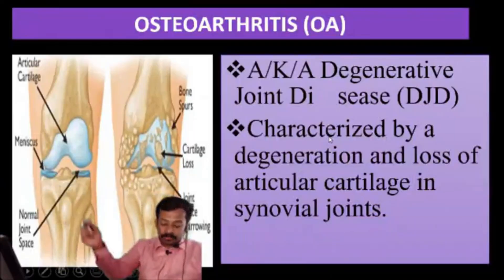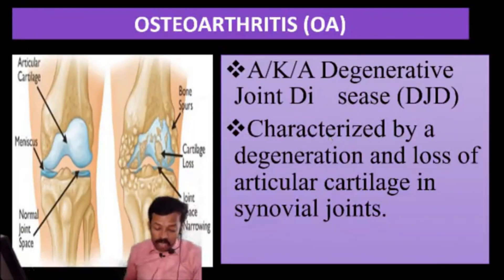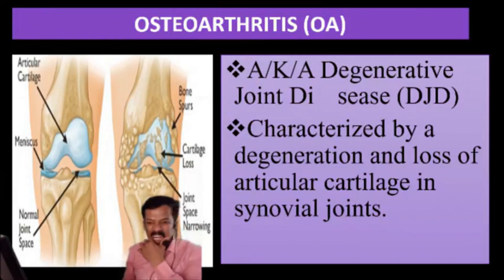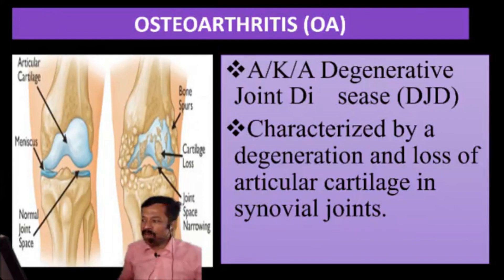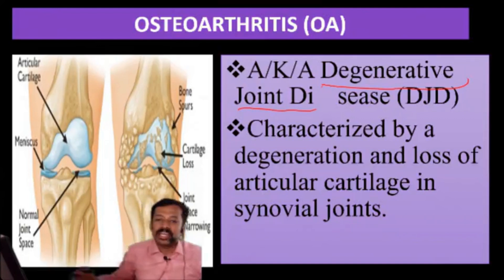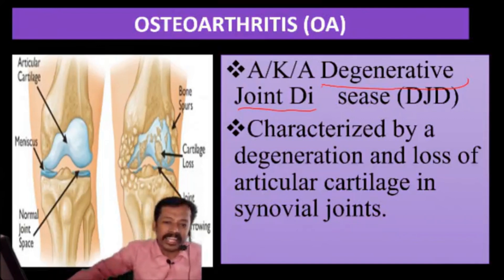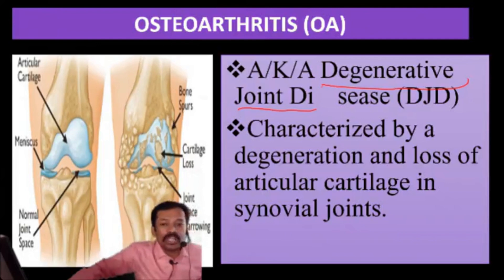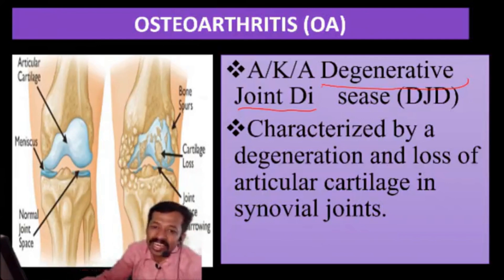Next, what is osteoarthritis? The main point is that it is a degenerative disease — a degenerative joint disease, DJD. Osteoarthritis is otherwise known as DJD.